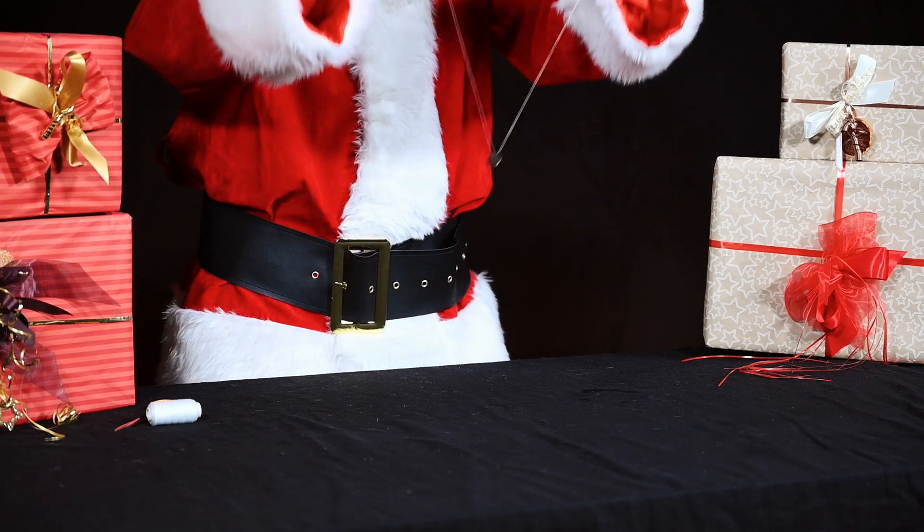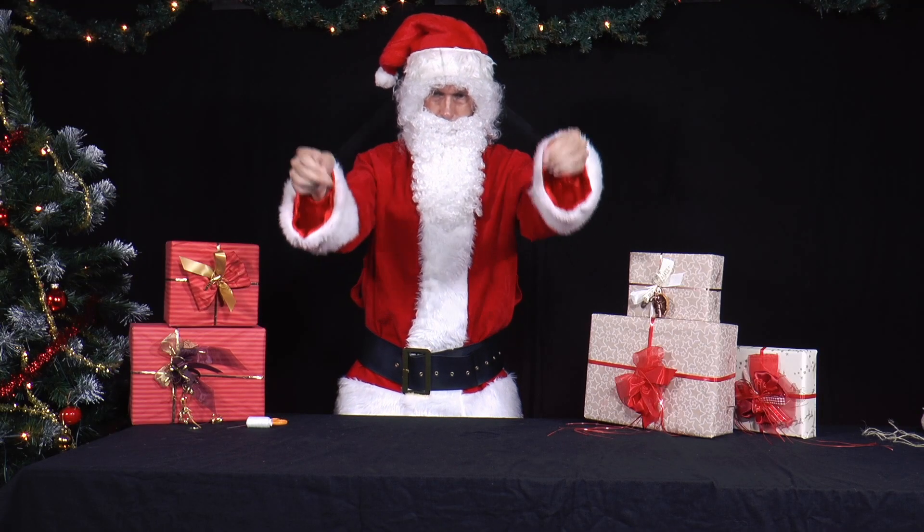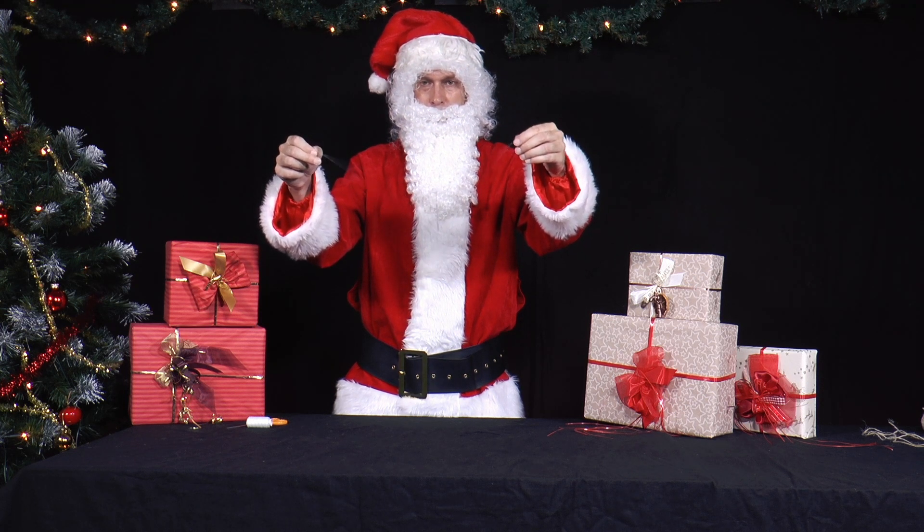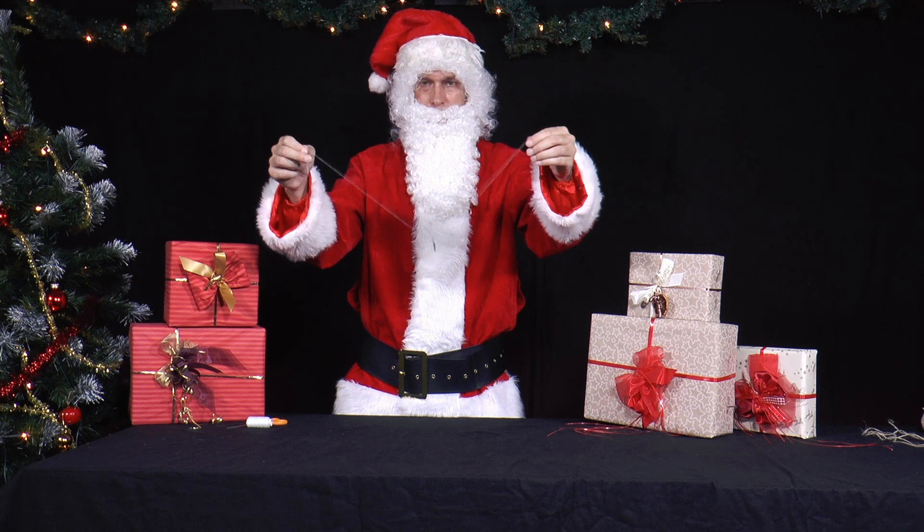He takes momentum and lets the button circle in front of him, as shown in the film. Then he moves his hands sometimes together horizontally, sometimes apart horizontally. What changes for the button?